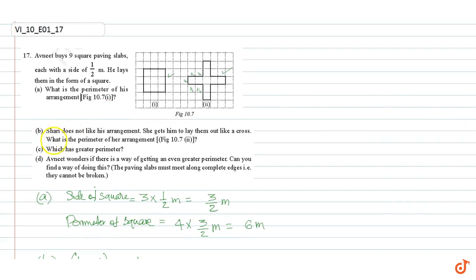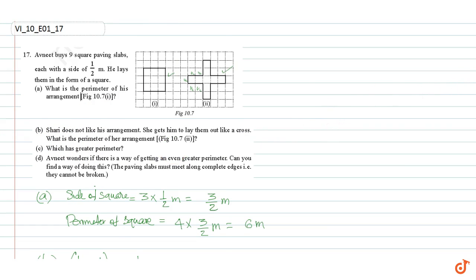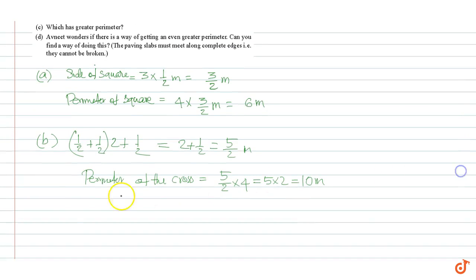Part C: which has the greater perimeter? Since 10 is greater than 6, the cross arrangement has the greater perimeter.